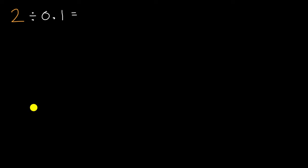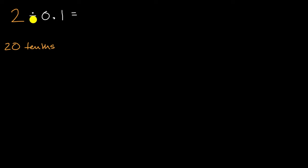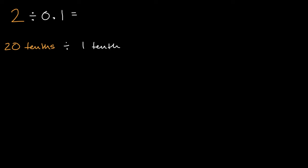One way is to think about everything in terms of tenths. Two wholes is how many tenths? Well, a whole is equal to 10 tenths, so two wholes is equal to 20 tenths. So I can rewrite the two as 20 tenths. That gives us 20 tenths divided by 1 tenth. If I have 20 of something and I divide it into groups of one of that something, I'm going to have 20 equal groups. So 20 tenths divided by 1 tenth equals 20.